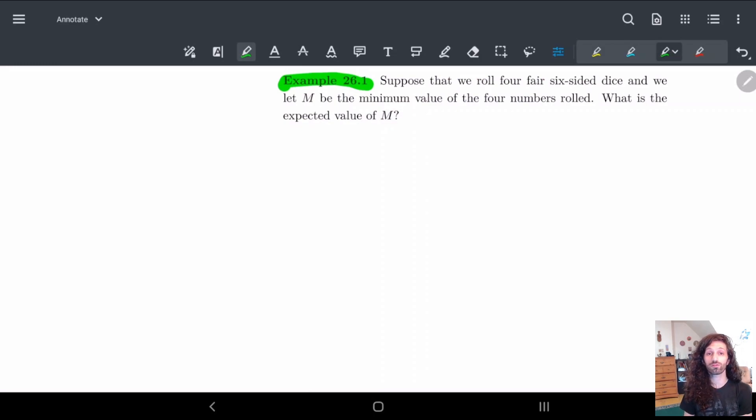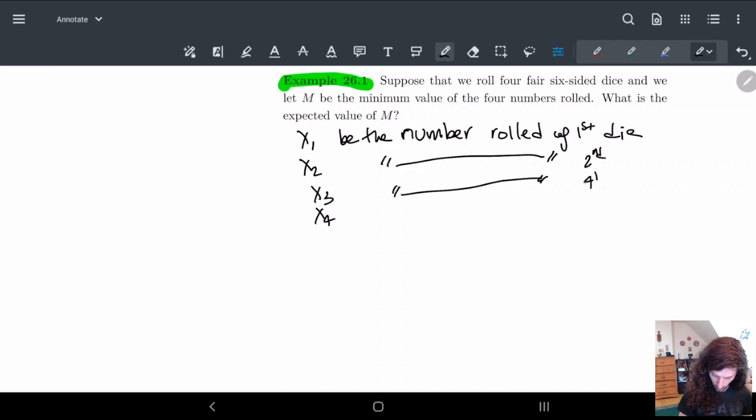What we're doing is we're supposing that we roll four fair six-sided dice. So we have four six-sided dice and they're all fair. There's no weirdness about them. And we let M be the minimum of the four numbers rolled. So let me write this down. Let X1 be the number rolled of the first die, X2 be the number rolled of the second die, X3 and X4 similarly.